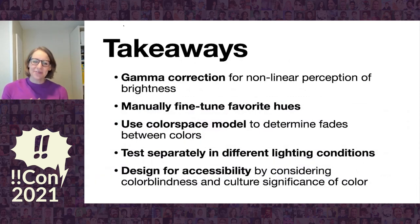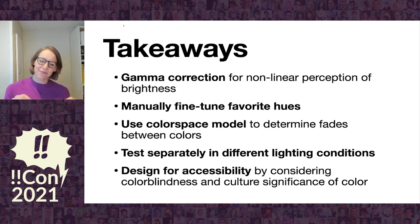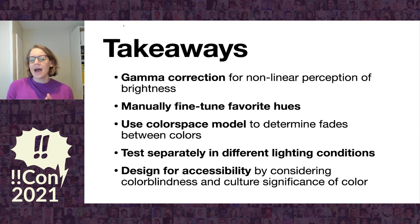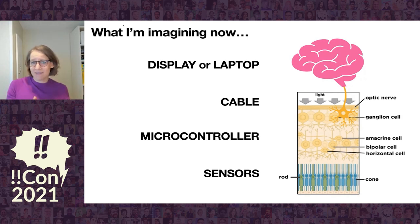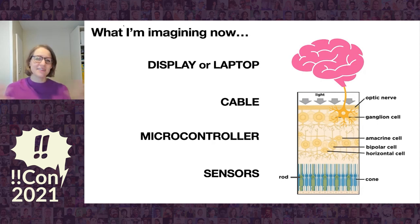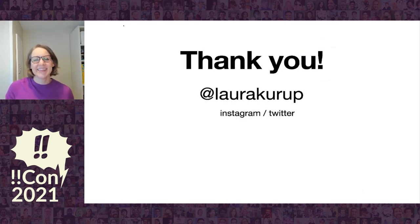So at the end of the day, what I'm now doing when I work with LEDs is making sure I do gamma correction for the non-linear perception of brightness. I'm still manually fine-tuning to pick my favorite hues — that exact color of purple or red I want — but I'm using a color space model to figure out how to fade between colors in a way that's going to look good. I'm testing separately in different lighting conditions because stuff just gets weird when it's dim. And in a lot of my designs, I'm thinking about how would this look to a colorblind person, and how would this look given the cultural significance of color. I know a brain is not a computer, but I've started thinking of these rods and cones more like sensors — they have inputs they work well for and limitations — and all the cells they're connected to before they even go to your brain is like a microcontroller with some logic on it. That impacts how we can see color, gives us this incredible adaptive ability, and lets us do really cool stuff with LEDs. Thanks for listening — I'd love to connect on Discord, Instagram, or Twitter if you have any questions.